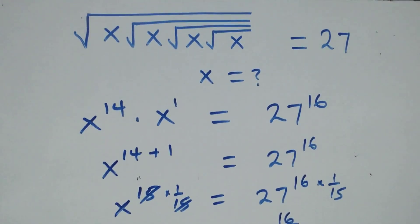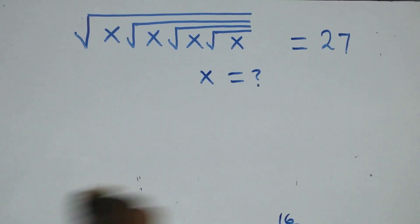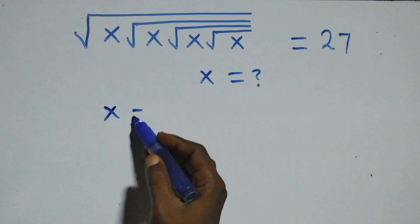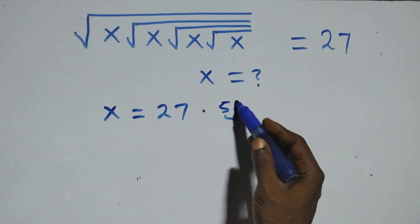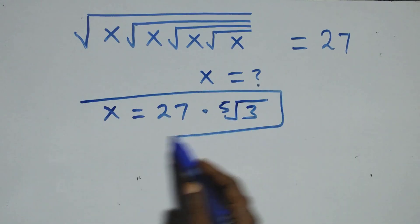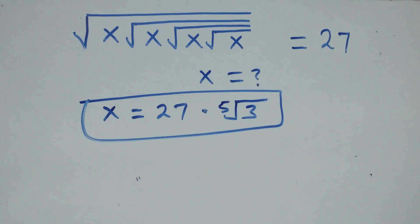We conclude that x equals 27 times the fifth root of 3 — that is the value of x. Thank you for watching. Don't forget to subscribe for more videos, share this video, give it a thumbs up, leave a comment, and see you next class. Bye for now.